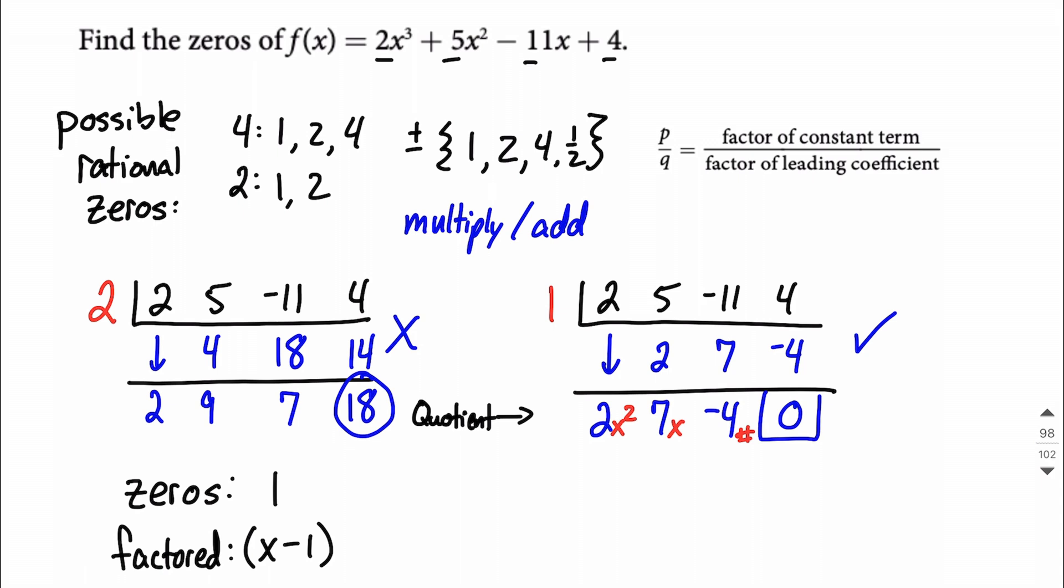So we're going to list that out. Hanging out next to this, so we're going to say 2x squared plus 7x minus 4.